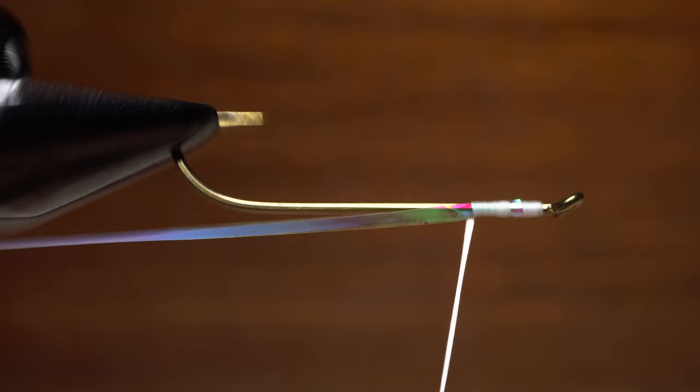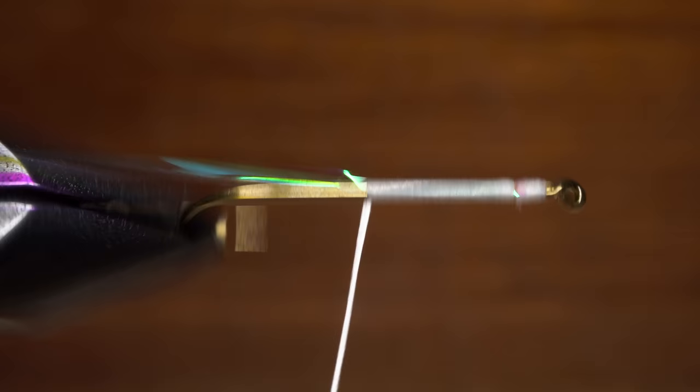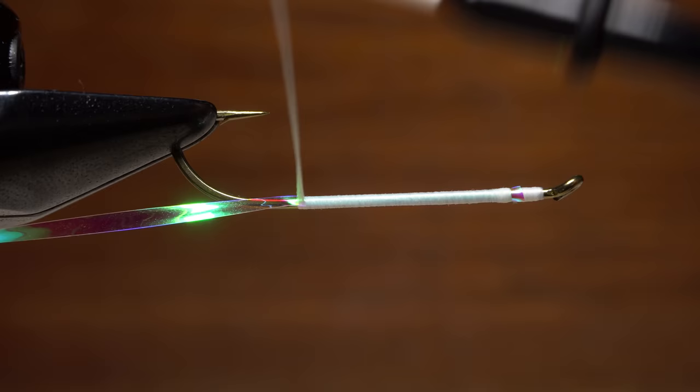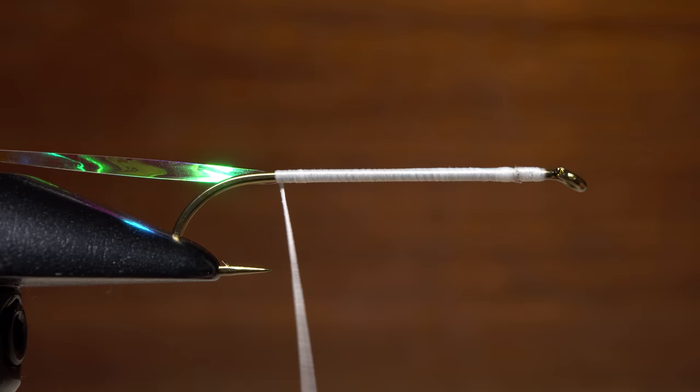Now for some rotary vise magic. Simply hold the stretch material at a slight angle rearward and begin rotating your vise to create the underbody of the fly. Be careful when you get back toward the hook point where it's better to wrap by hand to avoid cutting or fraying the material.